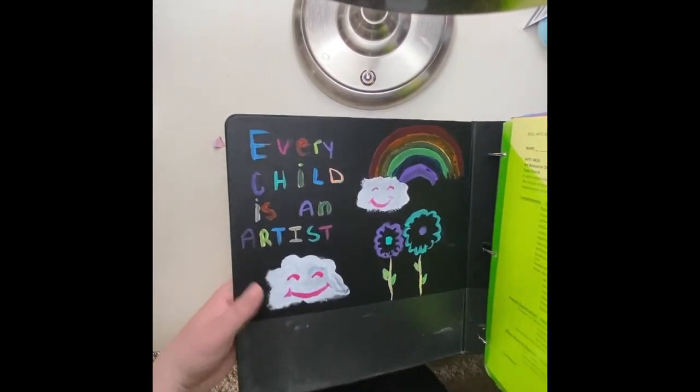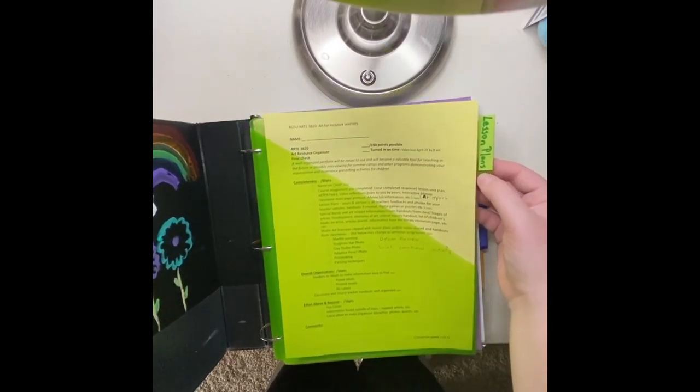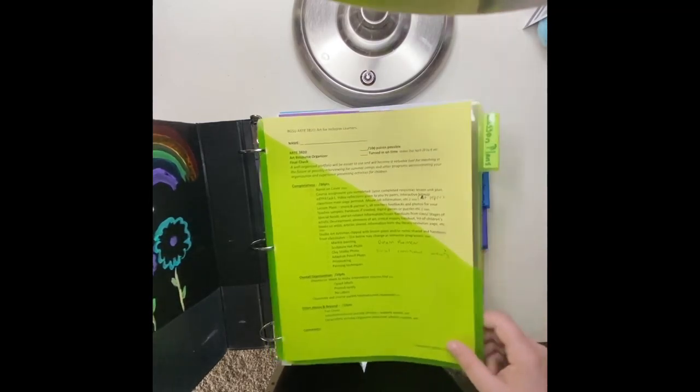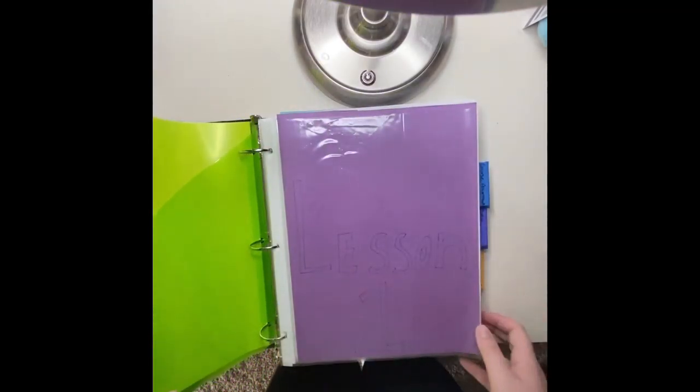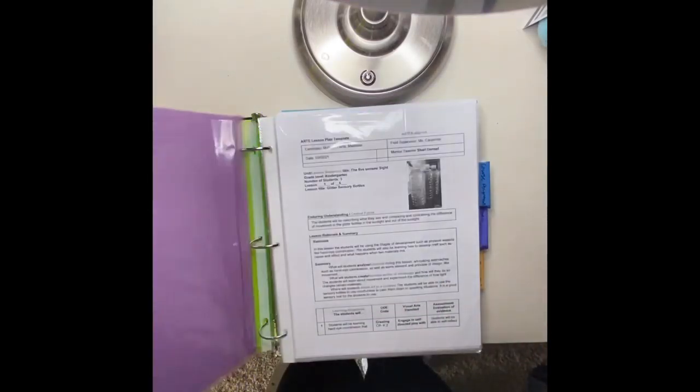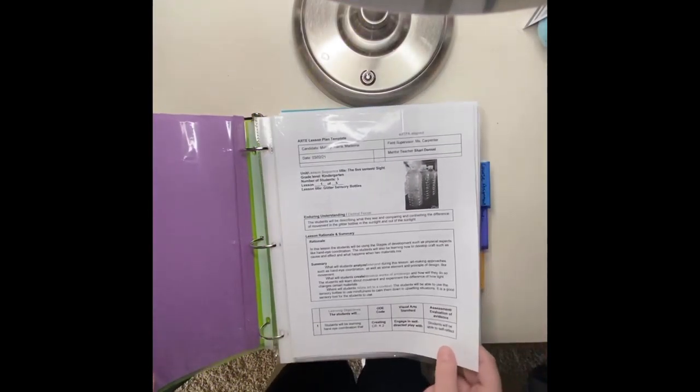Alright, so that's just my check sheet. My tabs are handwritten, so my first section is my lesson plans. This is lesson number one and I added just a sheet of paper. Here is the first lesson plan.